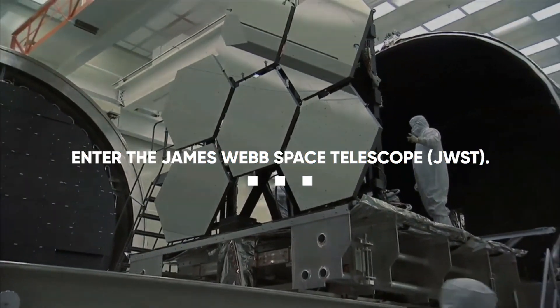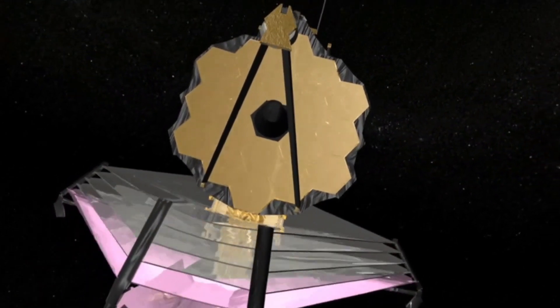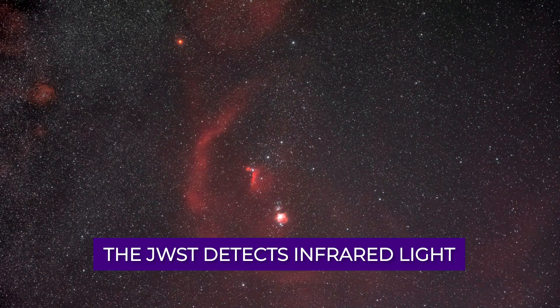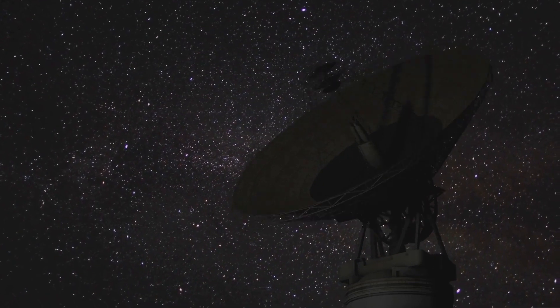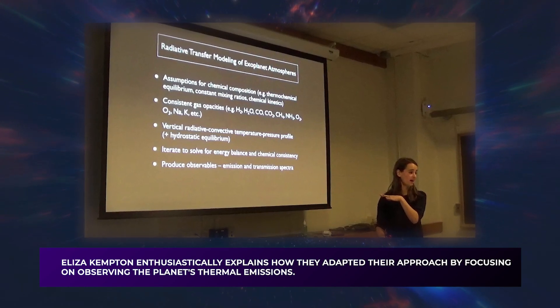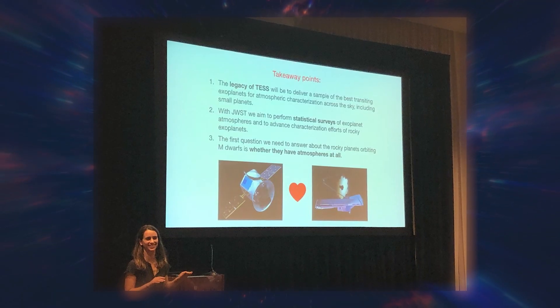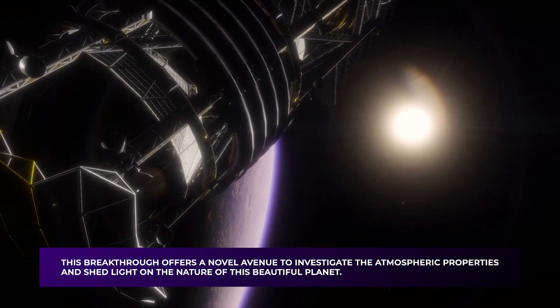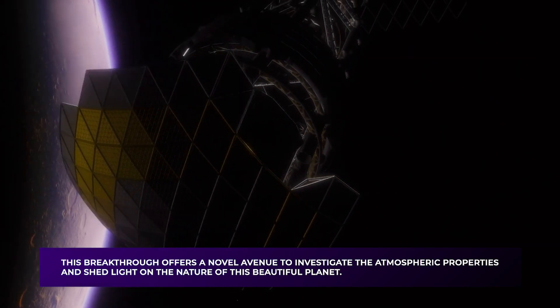Enter the James Webb Space Telescope. This revolutionary instrument can potentially transform our understanding of this enigmatic world. Launched recently, the JWST detects infrared light, which can be likened to heat. This innovative capability presents a fresh perspective on studying GJ-1214b. Eliza Kempton enthusiastically explains how they adapted their approach by focusing on observing the planet's thermal emissions. Astronomers achieved remarkable success by capturing the heat radiating from GJ-1214b. This breakthrough offers a novel avenue to investigate the atmospheric properties and shed light on the nature of this beautiful planet.